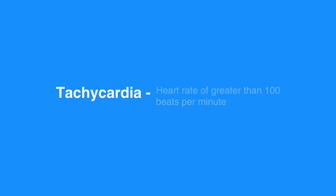Tachycardia is a heart rate of greater than 100 beats per minute. When the heart beats too quickly, there is a shortened relaxation phase. This causes two main problems.